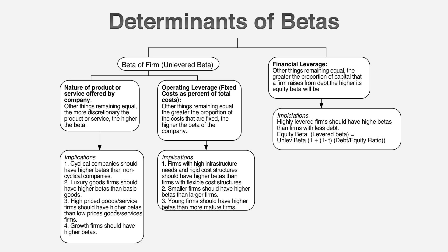If your customers can live without your product — they can delay or defer buying it — you should have a higher beta than if you produce a good or service that's an absolute necessity. A grocery store should have a lower beta than Tiffany's. The second building block: tell me something about your cost structure. The greater the proportion of your costs that are fixed costs, the higher your beta will be. Why? Because with a lot of fixed costs, good times become great and bad times become terrible — everything gets magnified.